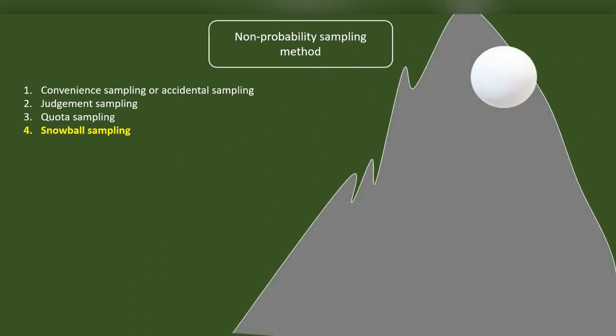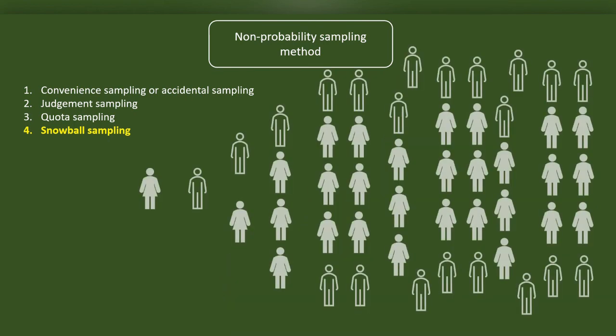When a snowball rolls over the snow from the top of a snow mountain, its size increases. Likewise, when we move from participant to participant, the sample size increases.